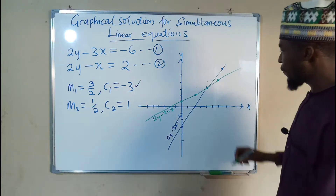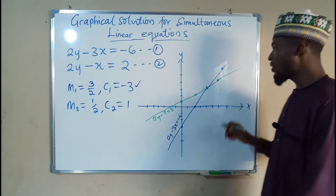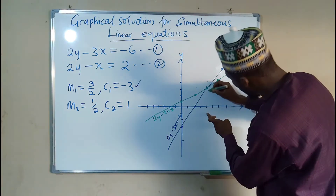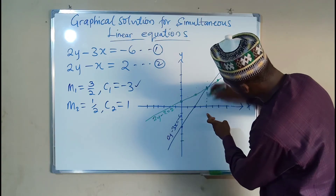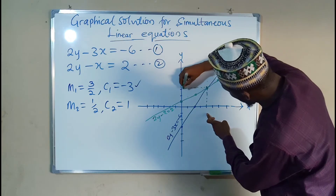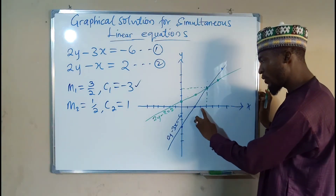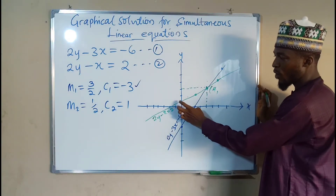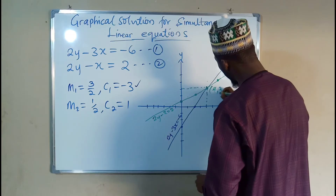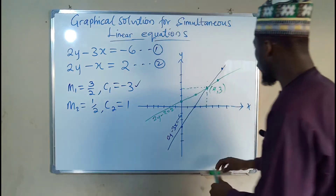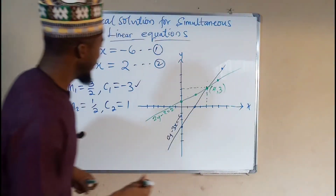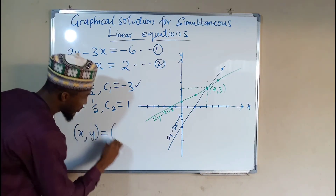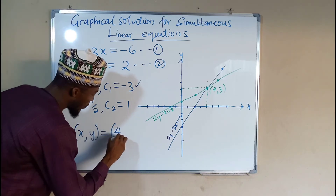So the point of intersection is here. What is the coordinate at that point? Starting with x: counting along the x-axis, we have 1, 2, 3, 4 — so x equals 4. For y, we have 1, 2, 3 — so y equals 3. It means the solution for these simultaneous linear equations is x equals 4 and y equals 3.